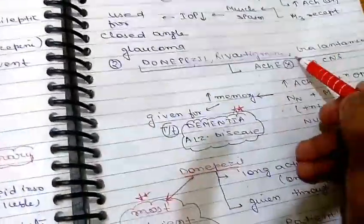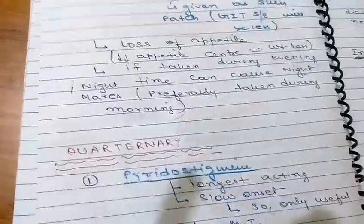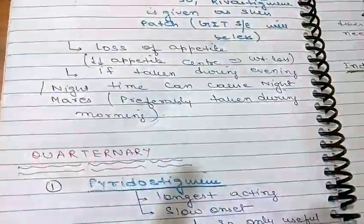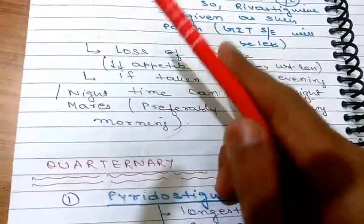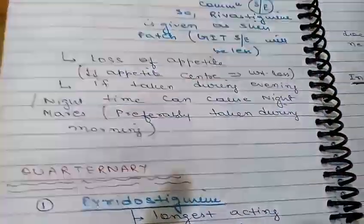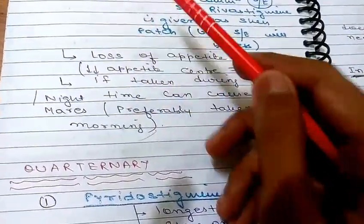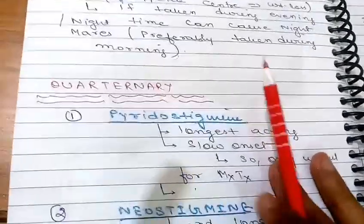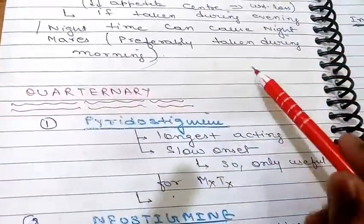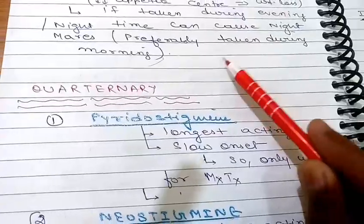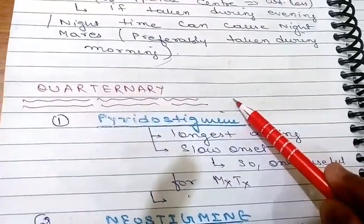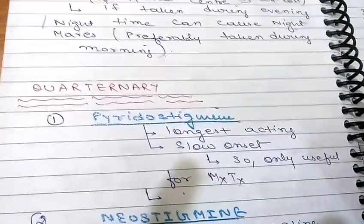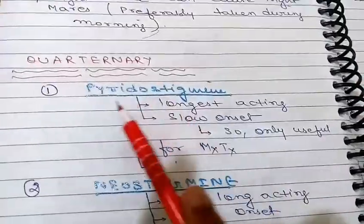Summary of what we have discussed so far: first, irreversible blockers — carbamates and organophosphates; then reversible blockers — first the tertiary group including physostigmine, donepezil, rivastigmine, and galantamine; and before that, directly acting drugs with two groups — esters and alkaloids. In esters: acetylcholine, methacholine, carbachol, bethanechol; in alkaloids: mainly pilocarpine. Now going to the quaternary structure group of drugs.